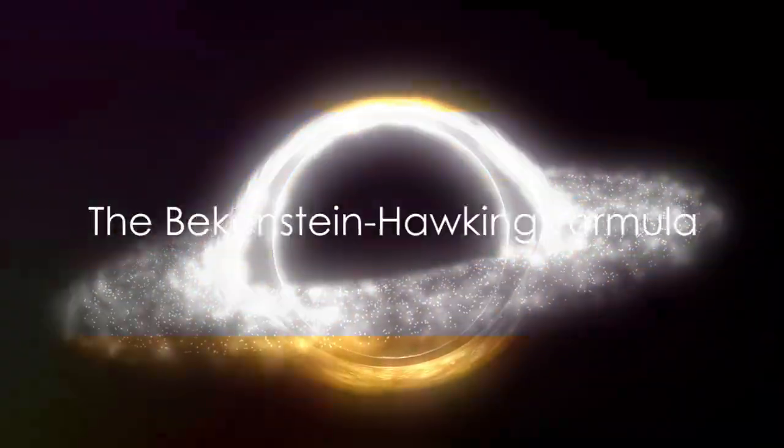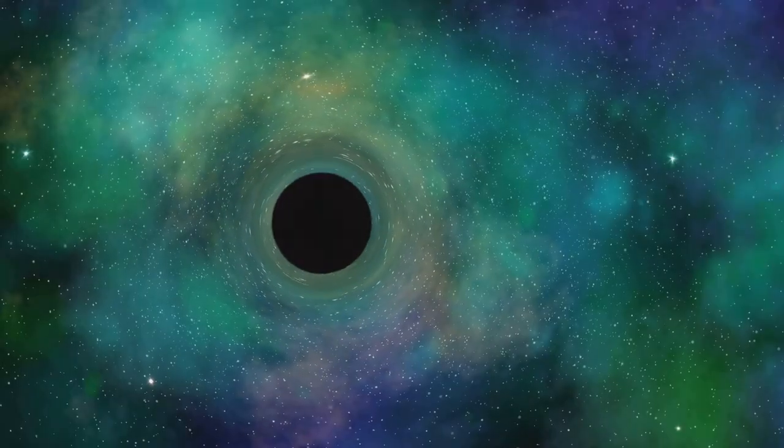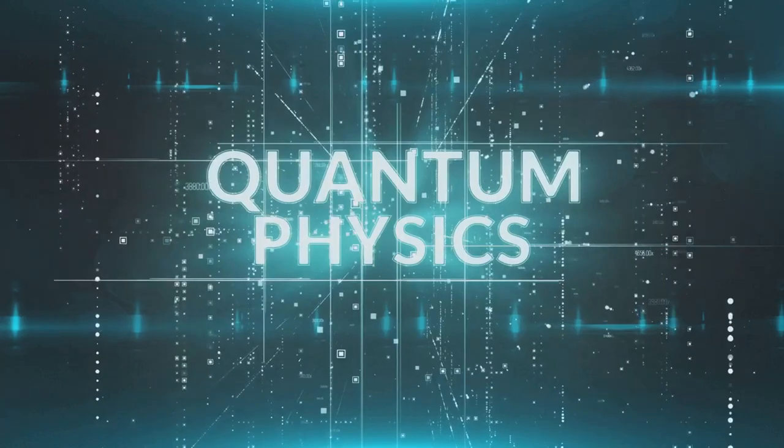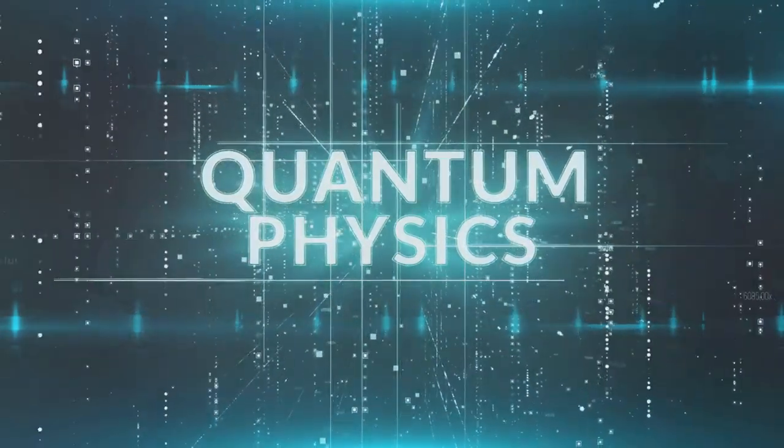So, what is this Bekenstein-Hawking formula all about? Well, in the simplest terms, it's a recipe that describes how much information a black hole contains. By information, we don't mean data like in a computer, but the physical properties that define everything in our universe.